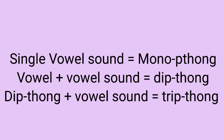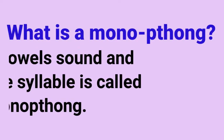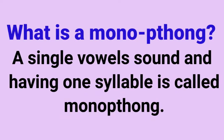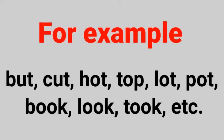اب ہم vowels کی combination کے بارے میں بات کریں گے۔ پہلے ہم monophthong کو بیان کریں گے۔ What is monophthong? A single vowel sound having one syllable is called monophthong — ایک واحد single vowel sound جو ایک syllable میں ہو اور ایک ہی سانس میں بیان کیا جائے۔ جیسے but, cut, hot, top, lot, pot, book, look, tick, etc.